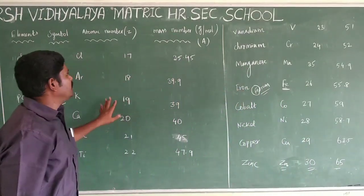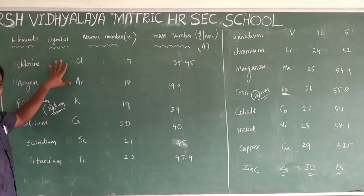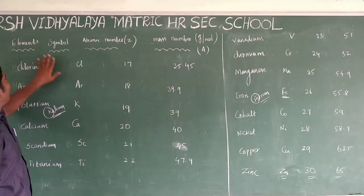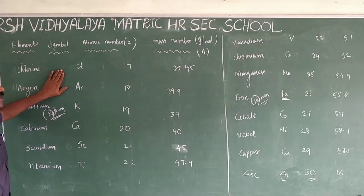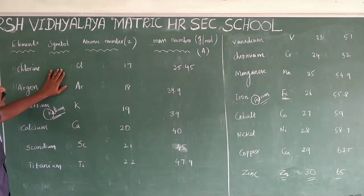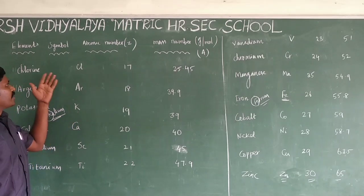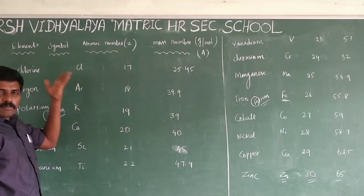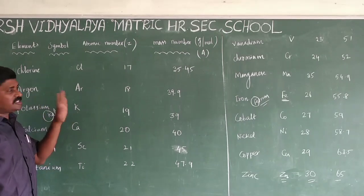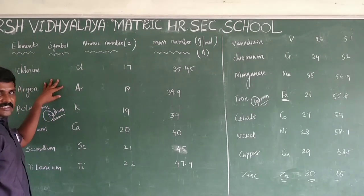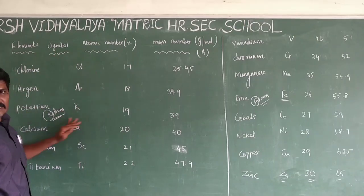Students, you must write down the elements and their symbols — this is essential in chemistry. Learn the first 30 elements including their atomic numbers, mass numbers, and symbols, as these are used to write many equations. In the next class, I will ask questions on this topic.